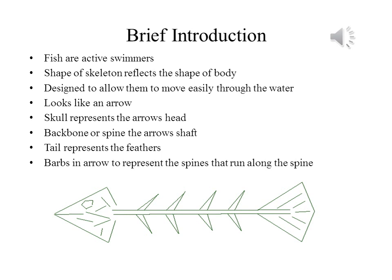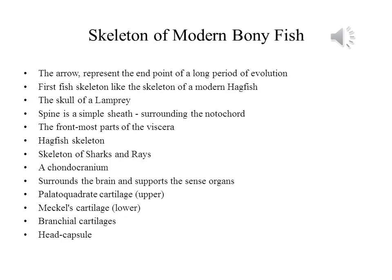Here is a diagram of all the detailed data discussed. You can see, in the same manner we have designed a fish skeleton — the head part, the vertebrae column, and the tail part all are representing an arrow shape. This was the skeleton of a modern bony fish, and even the arrow represents the end point of a long period of evolution.